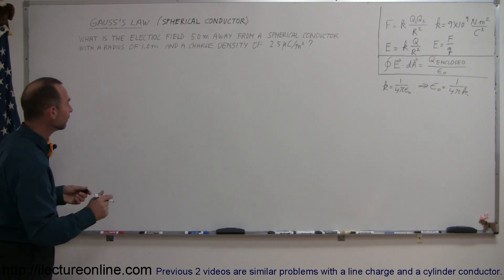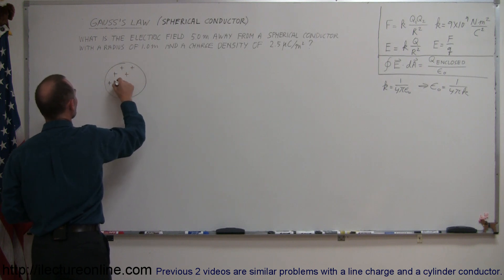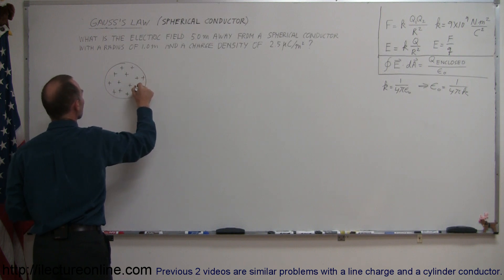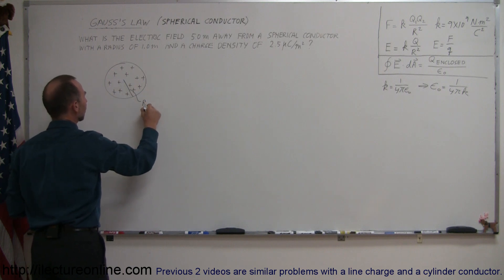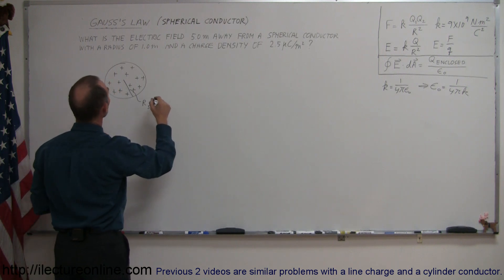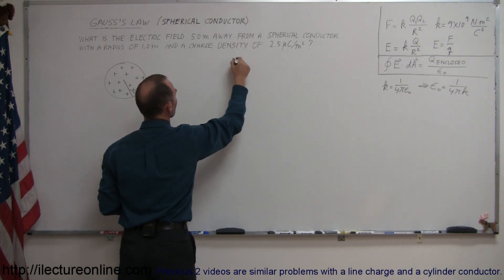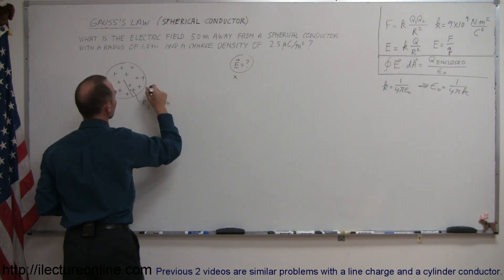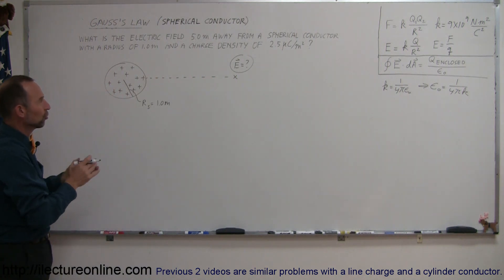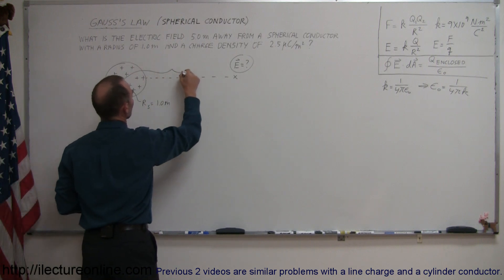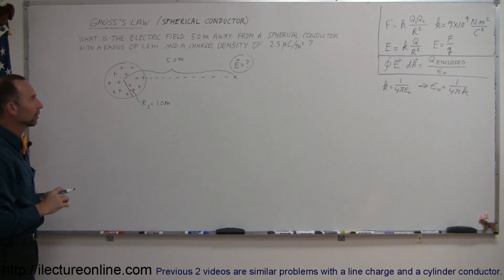Let's draw a picture of that. We have a spherical object with a uniform charge density. Since it's a conductor, all the charge will be equally distributed over the surface of the sphere. The radius of the sphere, R sub s, is equal to 1.0 meters, and we want to know the electric field strength E at a distance of 5 meters away from the sphere. The 5 meters is assumed to be from the center of the sphere, so this distance is 5.0 meters.